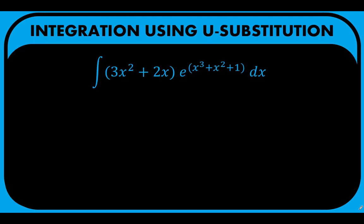We can think of integration using u-substitution as the unwinding of the chain rule of differentiation. So basically, if we have the chain rule in differentiation, in anti-differentiation we unwind that effect of the chain rule by using this technique called u-substitution. Let me demonstrate with an example.